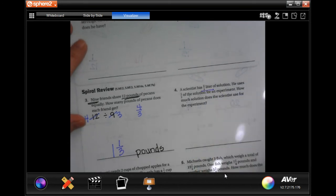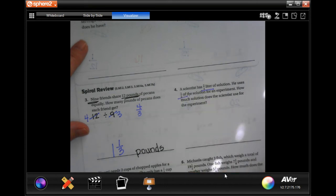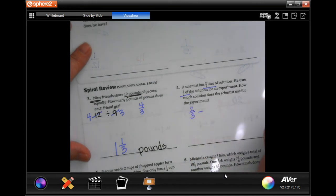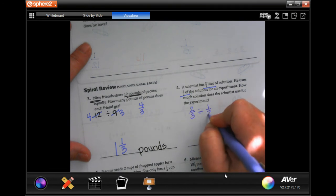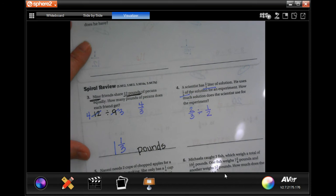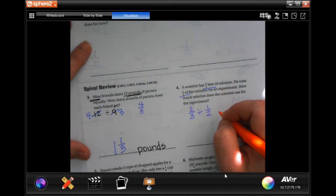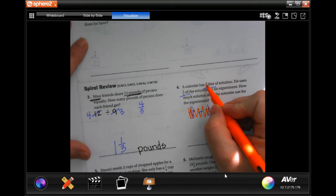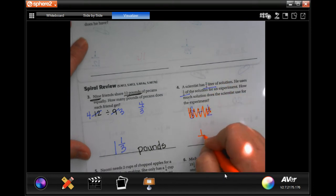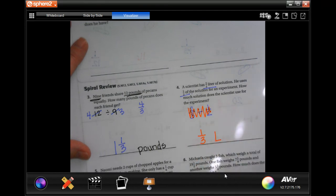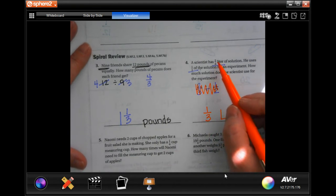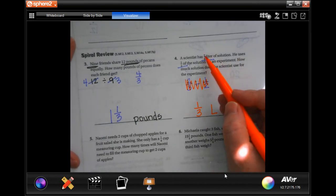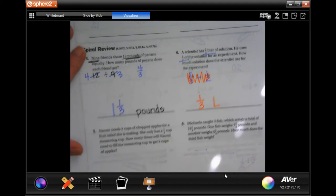A scientist has 2 thirds of a liter of solution. He uses half of that solution for an experiment. So, 2 thirds divided by a half. He has 2 thirds. Well, half of 2 is 1. So, 1 third of a liter. The capital L is liter. You can do this, you just don't have to. I'm trying to teach you guys to look at the problem, use your brains. Your numerator is 2. Half of that is 1. You keep your denominator.